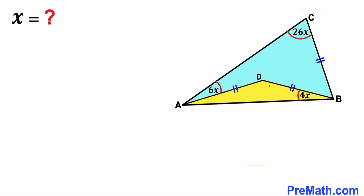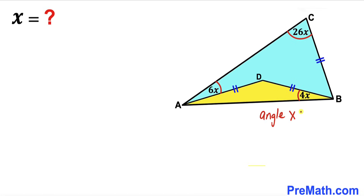Welcome to Pre-Math. In this video we have a yellow triangle ABD fully confined in a big triangle ABC, such that side length AD equals side length BD, and this equals side length BC. Furthermore, angle CAD is 6x, angle BCA is 26x, and angle ABD is 4x. Our task is to calculate angle x.